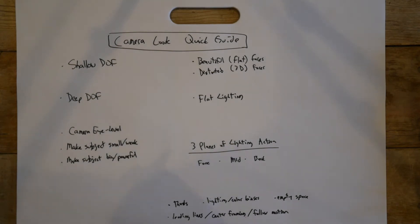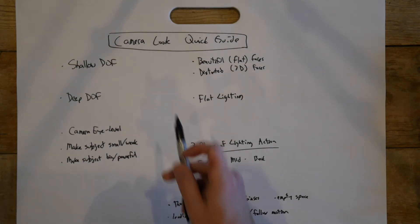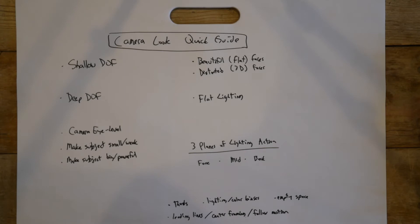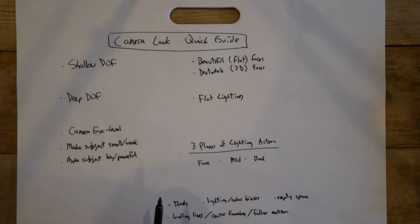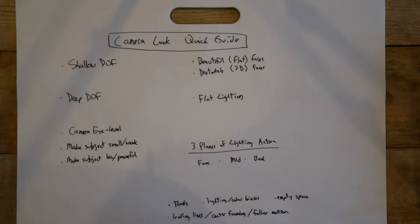This chart is the camera look quick guide. If you're going on set and you want something specific, these are some really conventional things that I'll describe how to do. They're very easy, and once you've got a little bit more experience, you'll just intuitively know these as a director or director of photography. I thought it'd be nice to have them all in one sheet.